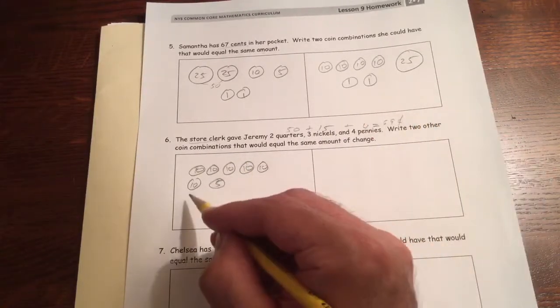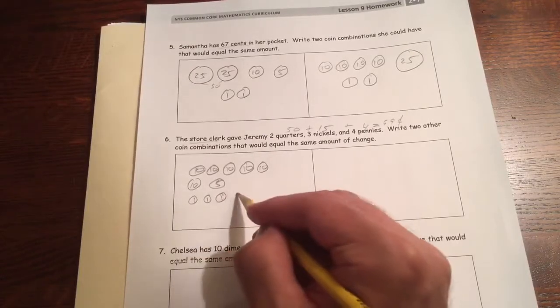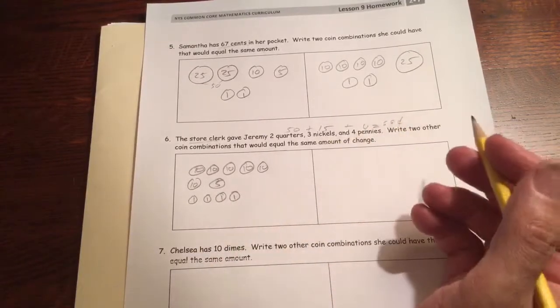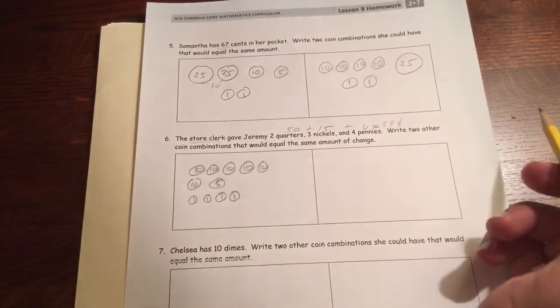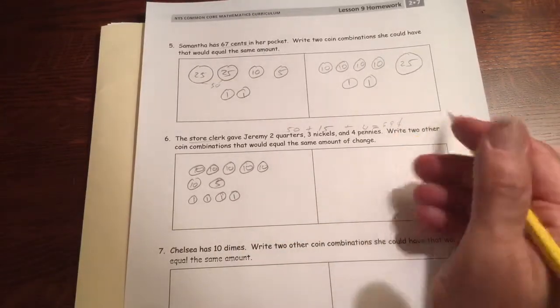And now we need 65, 66, 67, 68, 69. This is a lot like the other way. You're just adding one coin at a time. And that's one way to get the 69 cents.